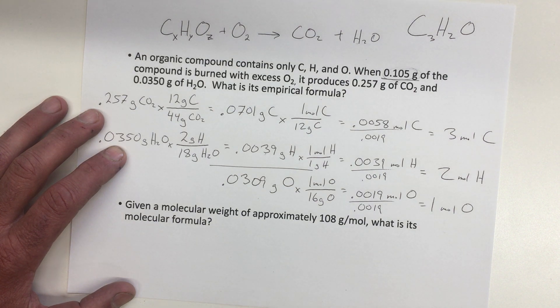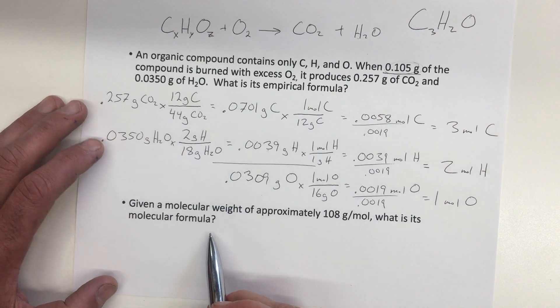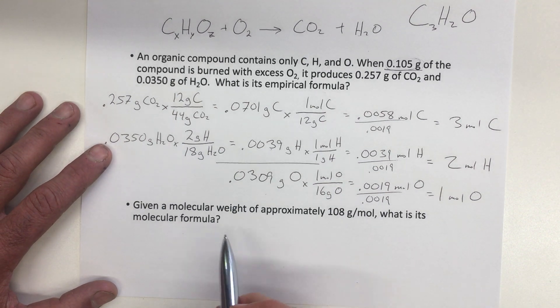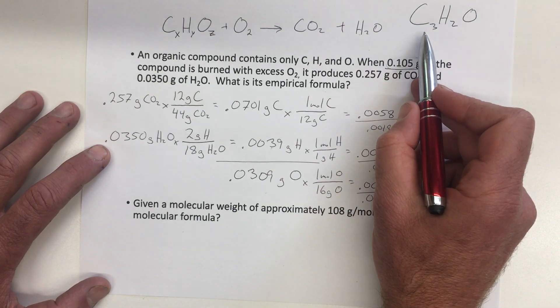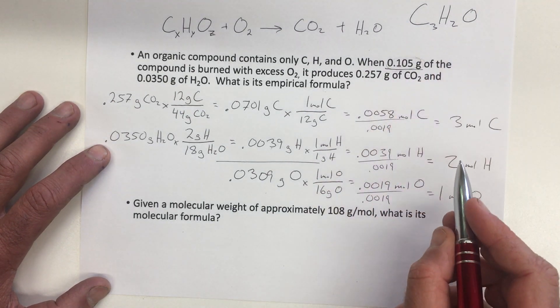And so the next thing we need to do is figure out what is the molecular formula. So molecular formula is the actual number of atoms of each type in the molecule. And so to do that, I'm going to add up the mass of this empirical formula.